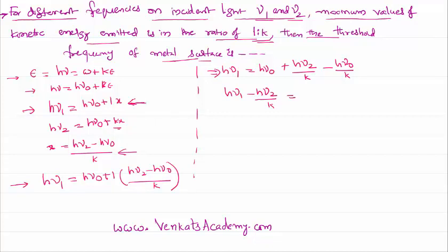Take h*nu0 common from both terms. The remaining terms, this and this: 1 minus 1 by k. So h*nu0 into (k minus 1) by k equal to h*nu1 minus h*nu2 by k.